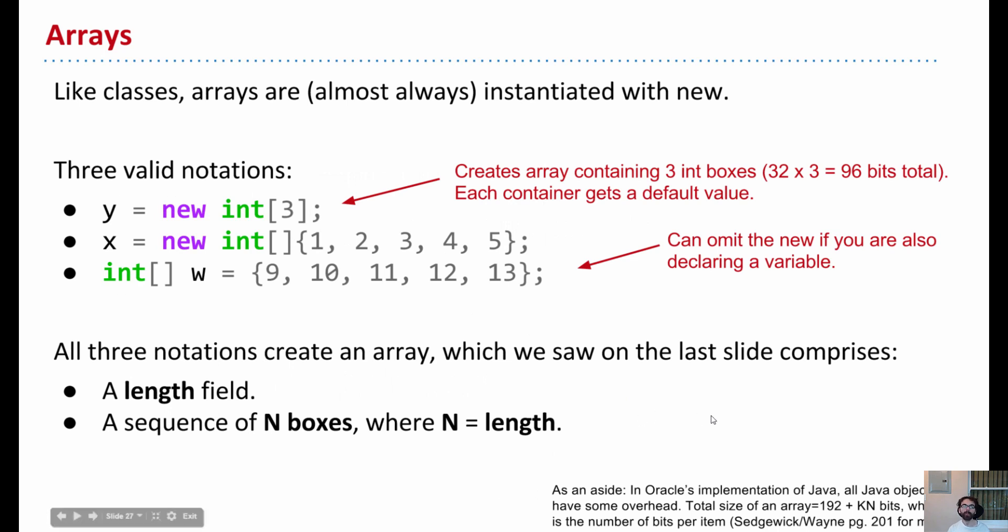Now like classes, arrays are going to be almost always instantiating using the new keyword. So for strings we saw, you don't have to use new. So with arrays, it's going to be new most of the time.